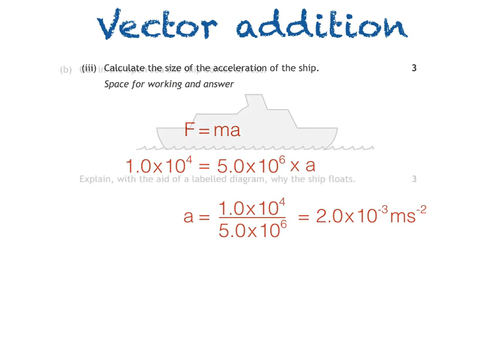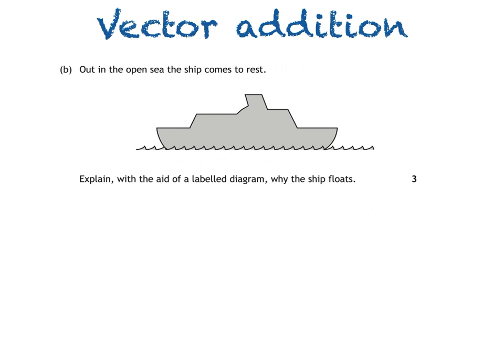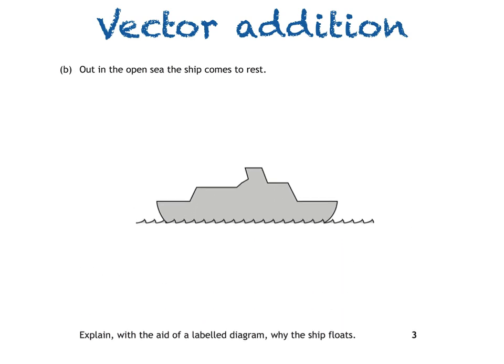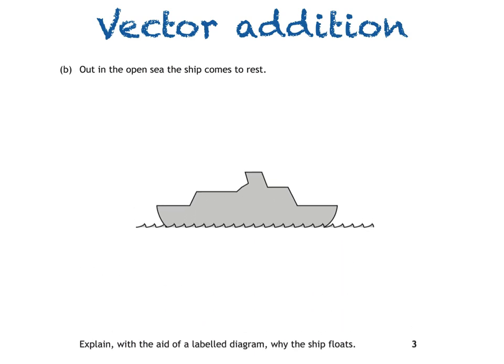The last part of the question says: out in the open sea, the ship comes to rest. Explain with the aid of a labeled diagram why the ship floats. Again, we'll give ourselves more space for the diagram.